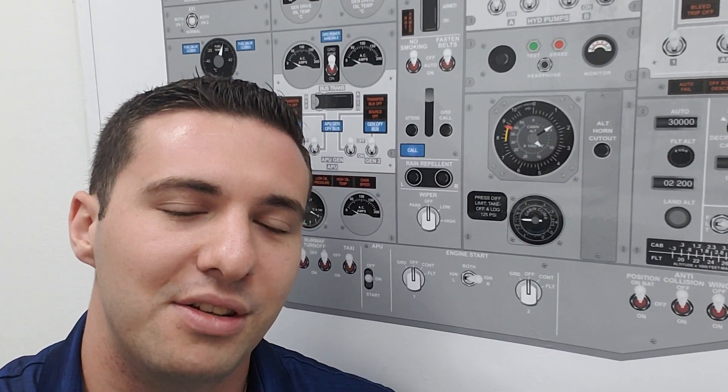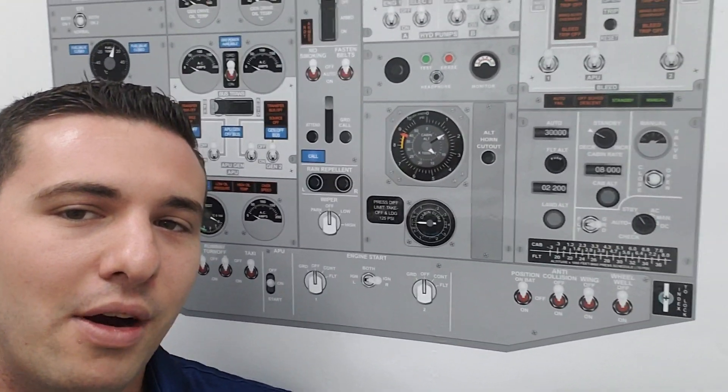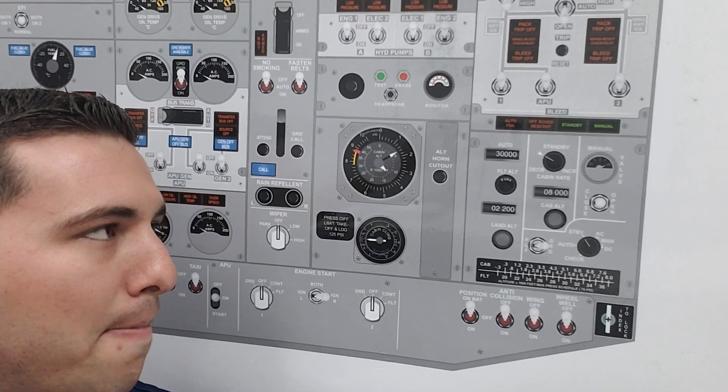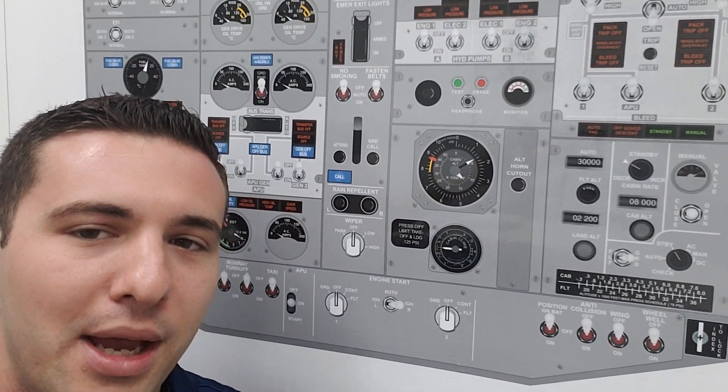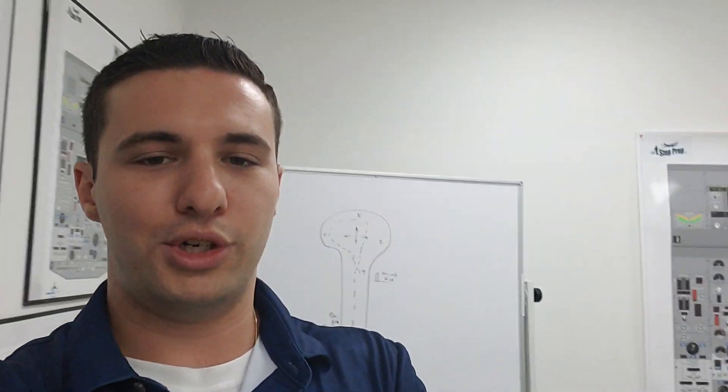That's a brief rundown of the pressurization system by special request — three parts: auto, standby, and manual. Most pressurization systems have these three modes: cabin pressure controller number one (primary), number two (secondary), and manual control.